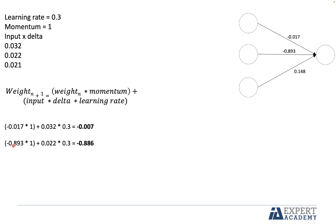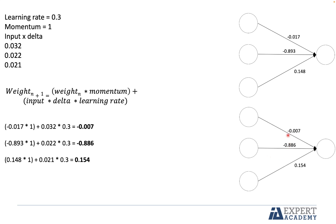Regarding the third weight: 0.148 times momentum, plus 0.028 — which is the input times delta — multiplied by the learning rate. The new weight is 0.154. So we have now updated the weights from the hidden layer to the output layer.